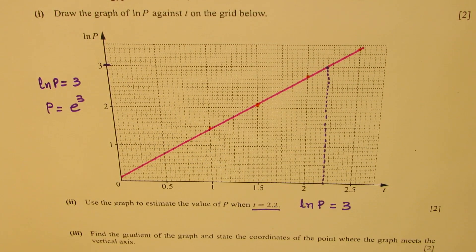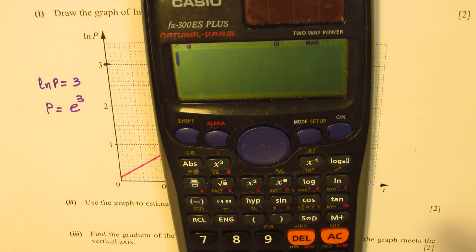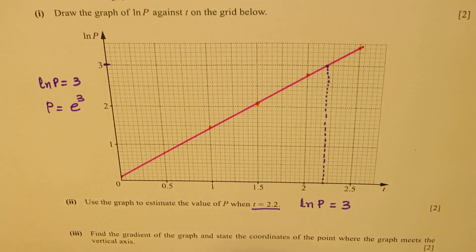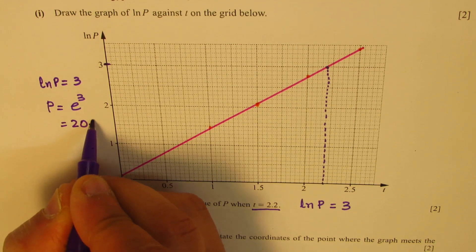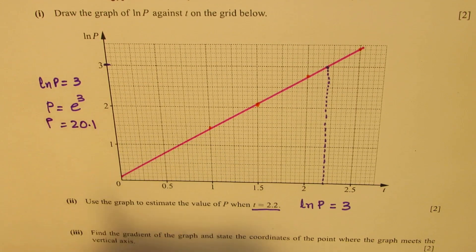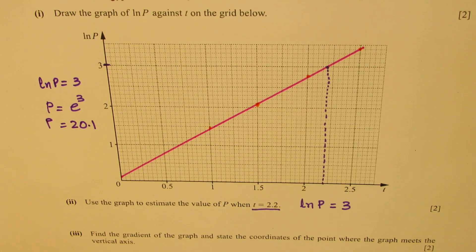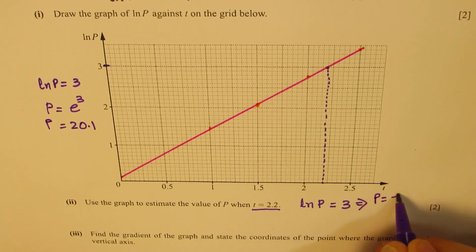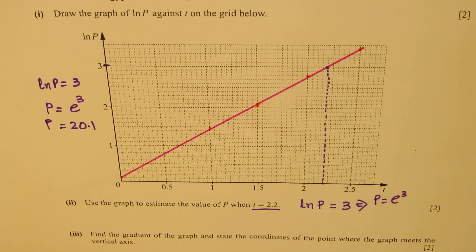So we get e³ as our value of P. Calculating: e³ equals 20.08, so we can write approximately 20.1. The exact value is e³, so P equals e³ ≈ 20.1. That gives us the value of P from the graph.